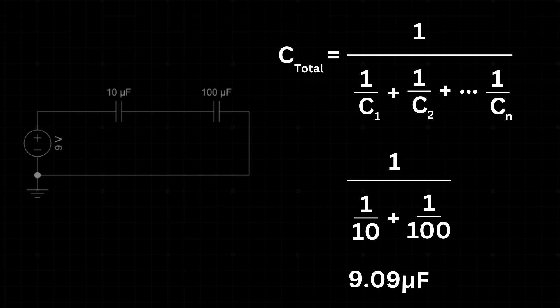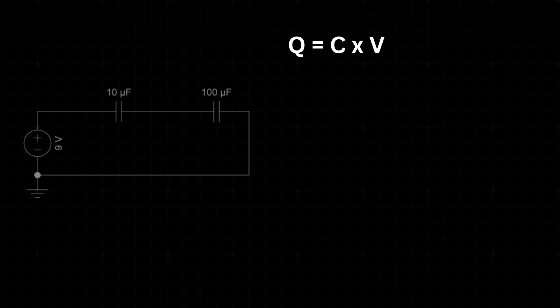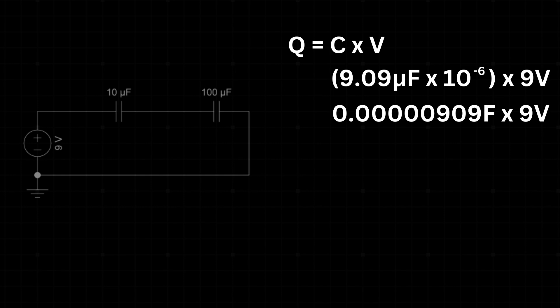In a series circuit, the charge on each capacitor is the same, but the voltage across each capacitor can differ. To find these voltages, we first calculate the total charge using Q equals the total capacitance times the battery voltage. For our circuit, 9.09 microfarads times 10 to the minus 6 times 9 volts equals 0.00008181 coulomb or 81.81 microcoulombs.